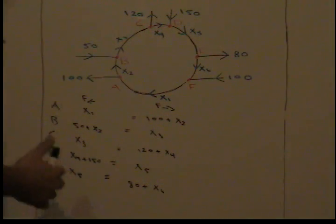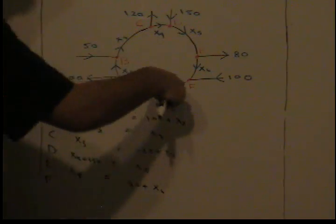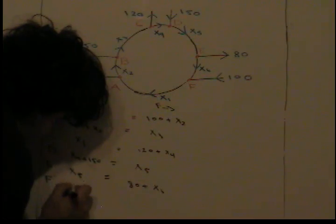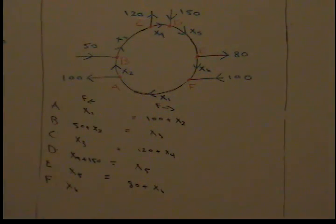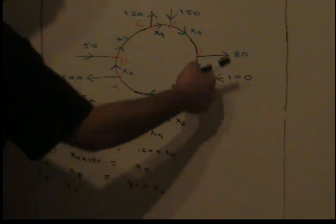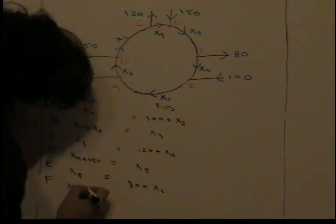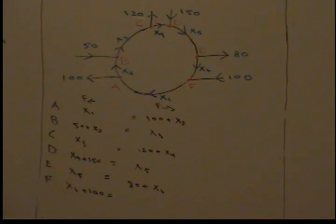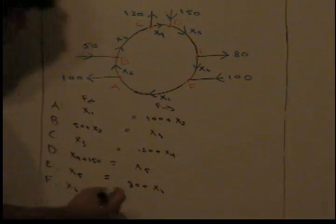Finally, node F. What flows into node F looks like x6 plus 100, equals what flows out of node F, which is just x1.